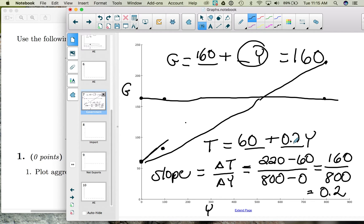This 0.2 has a name. It is the marginal tax rate. It says for every additional dollar of income, 20 cents is going to taxes.